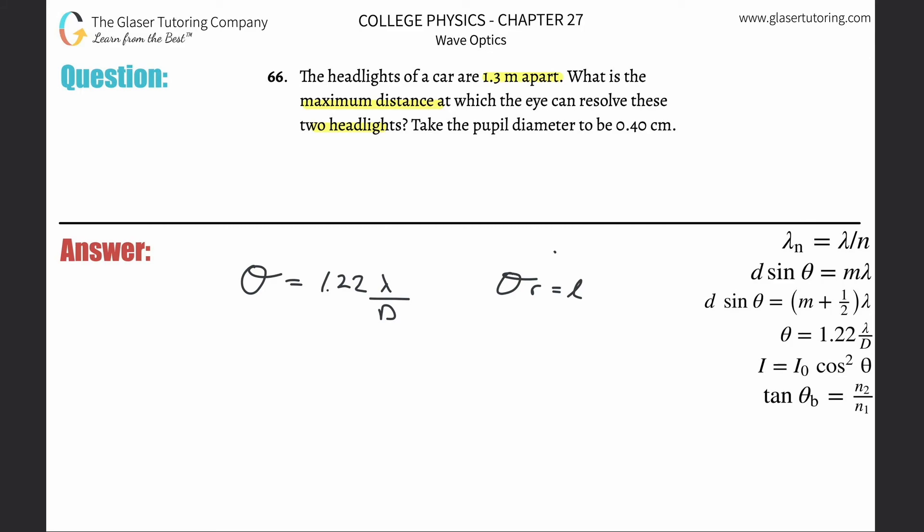So we want to find the maximum distance at which the eye can resolve these. In other words, we want to find that maximum r, the maximum distance between the person and the car. If I divide out theta, I would find r. If I realize that I want to maximize r, I have to maximize r.